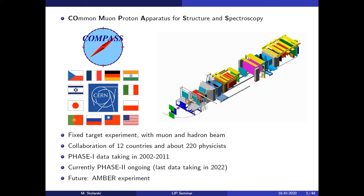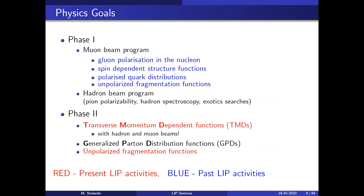COMPASS is an experiment with about 12 different countries and around 120 physicists. Phase one ran from 2000 to 2011, and phase two is ongoing. There is also a future experiment, AMBER, which was approved last year.